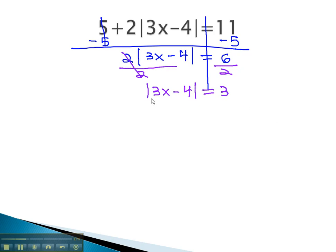Now that the absolute value is alone, we are finally ready to consider both positive and negative 3 for our work. We show this with our two equations: 3x minus 4 equals positive 3, and 3x minus 4 equals negative 3.